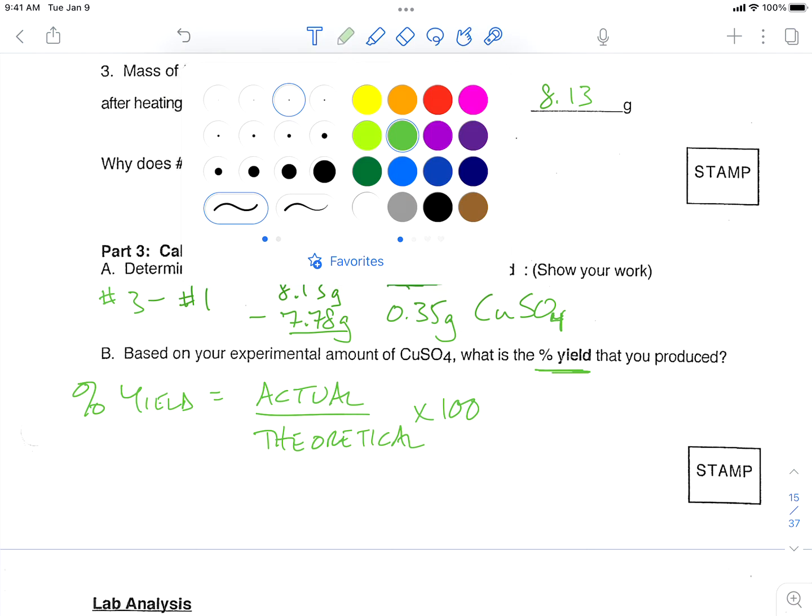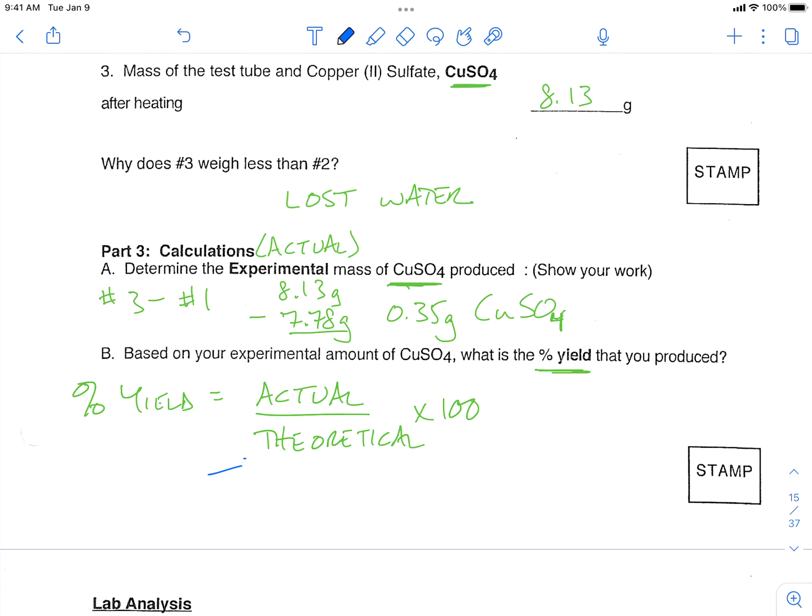An important idea about our theoretical, this is always a calculation. So we know what we actually got in our lab, 0.35 grams of copper sulfate left over. What should we have gotten?